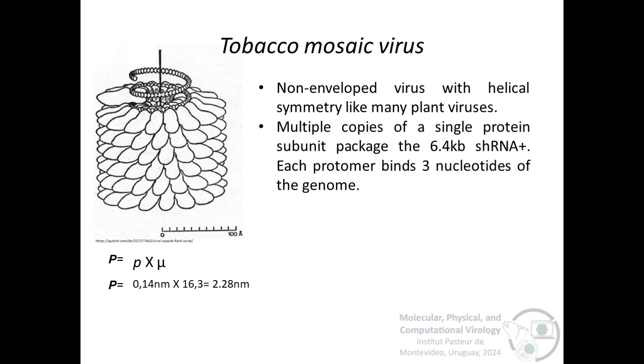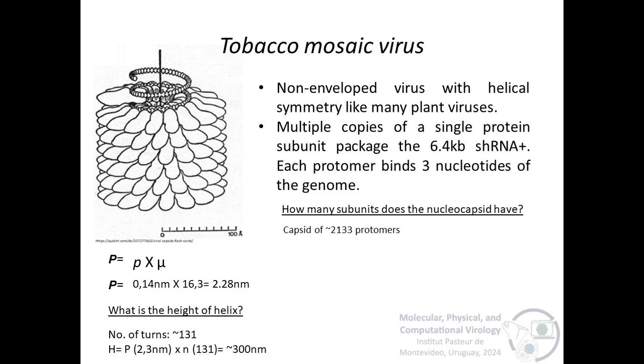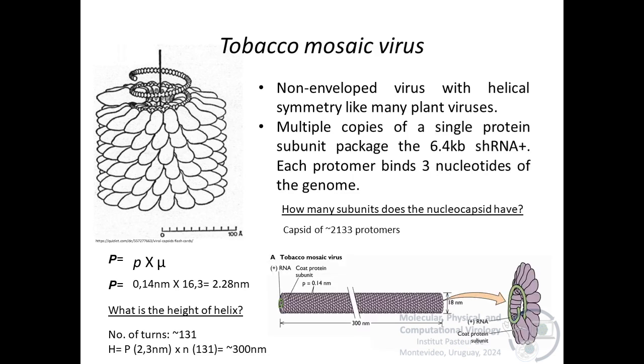The best understood helical nucleocapsid is the tobacco mosaic virus, the first virus to be identified, and the nucleocapsid has multiple copies of a single protein subunit, which package a single molecule of positive strand RNA of about 6,400 nucleotides in length. If we know that each subunit binds three nucleotides of the helix, how many subunits does the capsid have? 6,400 divided by three makes about 2,133 protomers. And if I know the pitch and the axial rise and the number of subunits per turn, I can calculate the height of the helix. The number of turns can be calculated using the number per turn, which is 16.3, and the total number of protomers. So 2,133 divided by 16.3 gives us 131 turns of the helix. Since we have the pitch, the height of the helix is 300 nanometers.